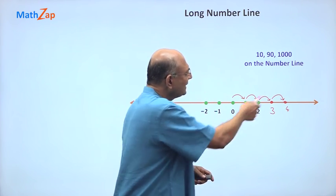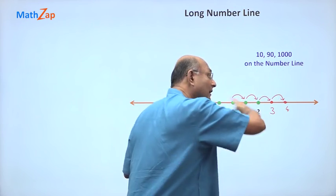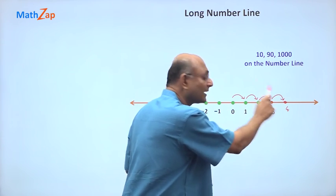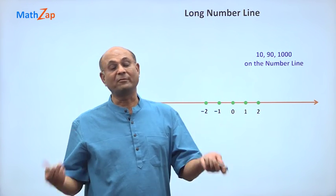How do I mark 10? 10 will be very far away. How do I mark 1000? It will be even far away, right? So we cannot mark on the number line like this. So then what do we do?